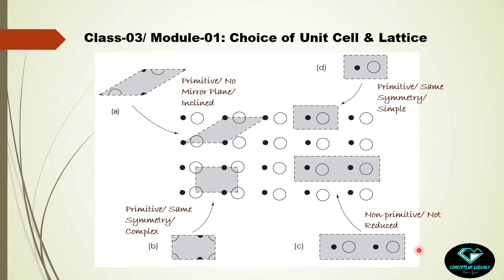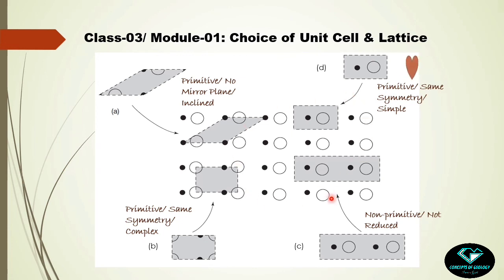Choice B is somewhat complex but otherwise valid. Choice C is not primitive — the unit cell is not reduced — so it fails. Choice D is primitive, the horizontal mirror plane is present, it has the same symmetry as the pattern, and it is simpler than choice B. Therefore, choice D is the best and most prominent unit cell for this pattern.